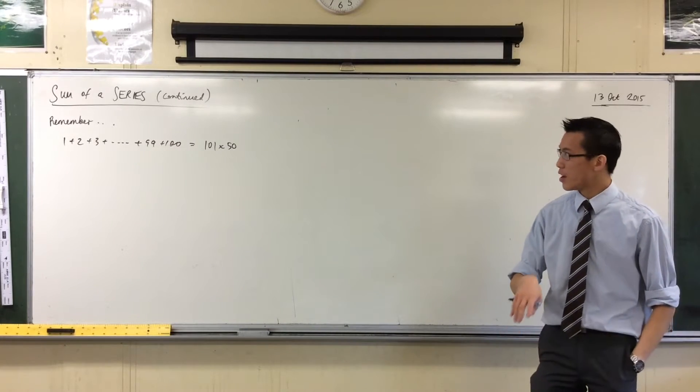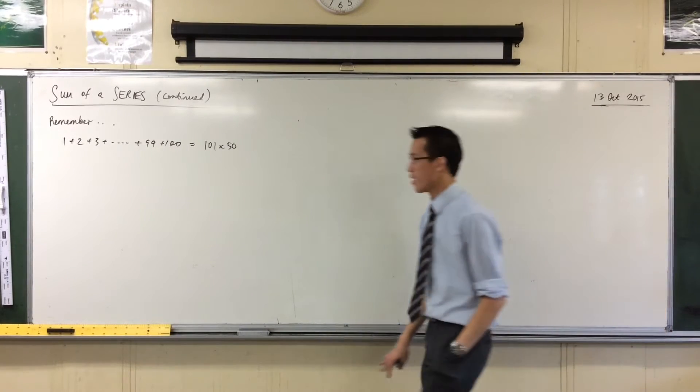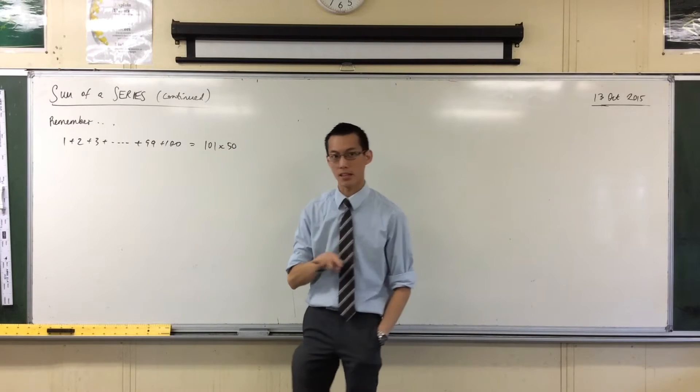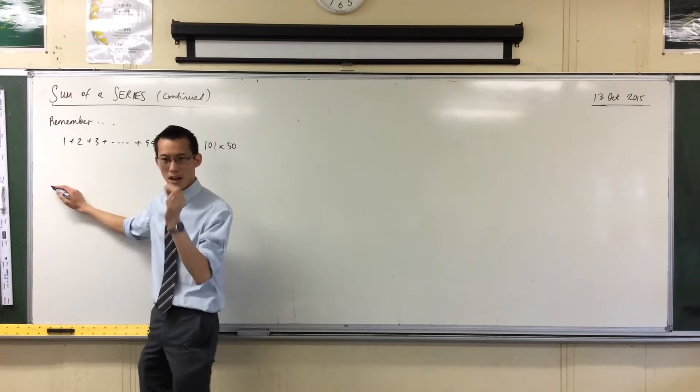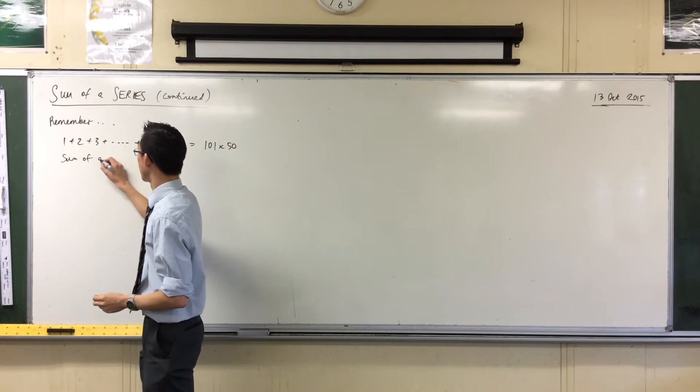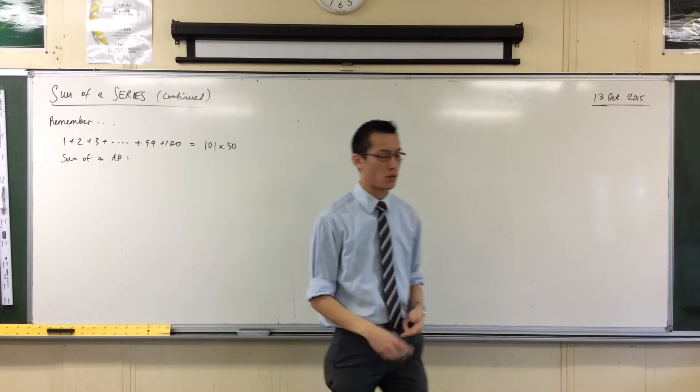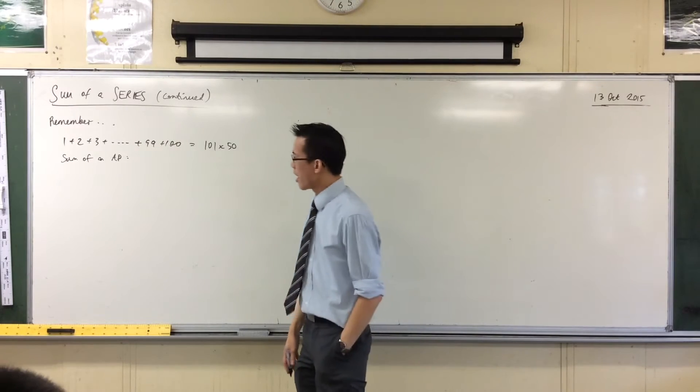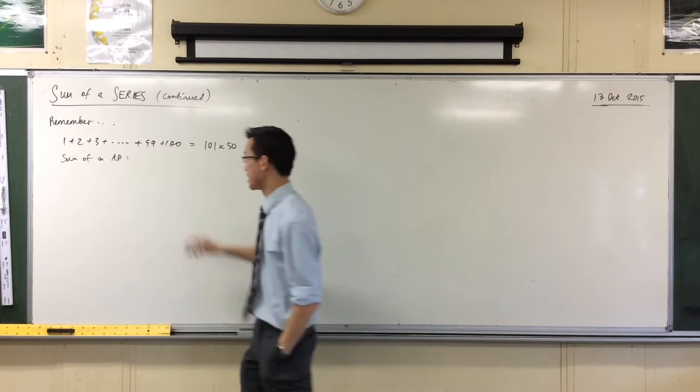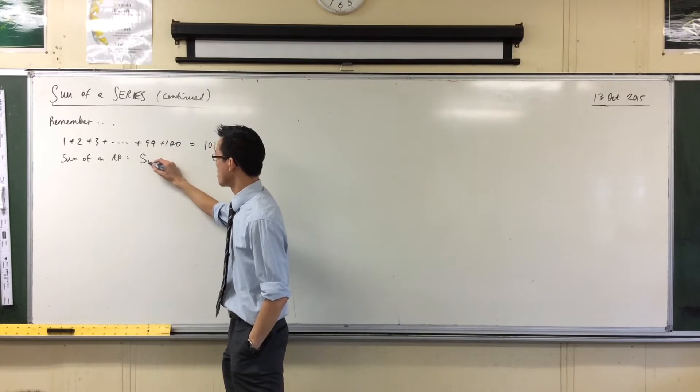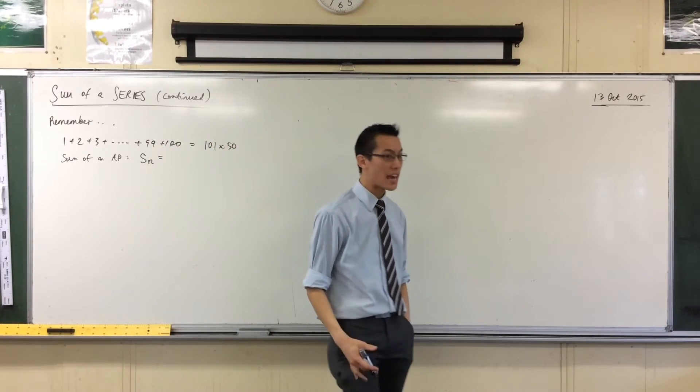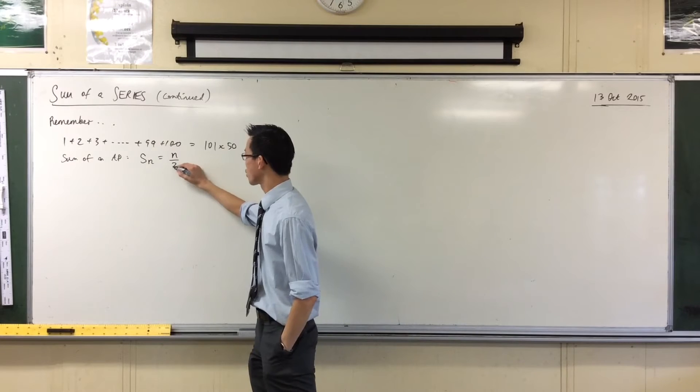Now what we did was we took it more specifically to APs. We said that you can think about this in a couple of ways. Number one, sum of an AP. We had two definitions for it, or two formulas if you like. Both of them were based around this pairing idea. So the sum, the partial sum up to the nth term, started with n on 2, that's how many pairs you've got in the series.